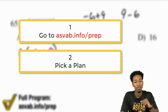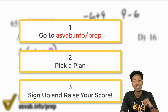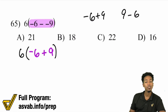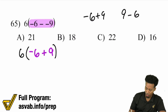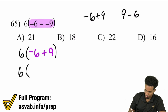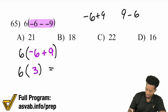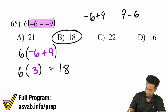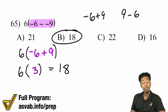And so with that, we have negative 6 plus 9, which is the same as 9 minus 6 — that'll end up being 3, positive 3. So 6 times 3 will give you 18. And B is the answer.